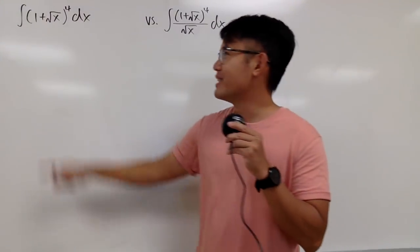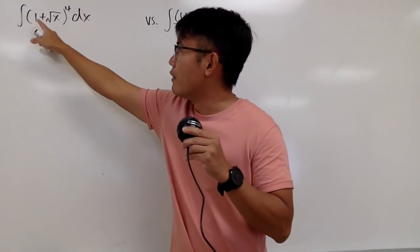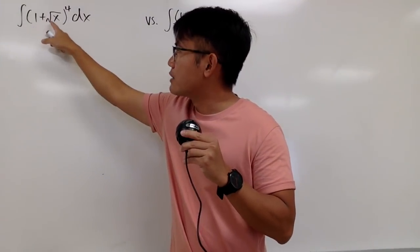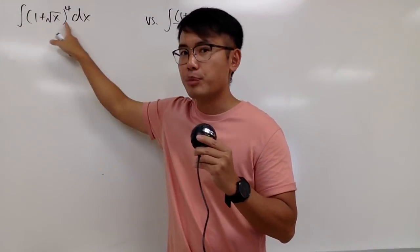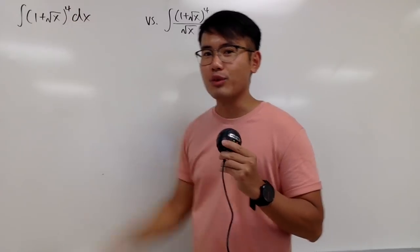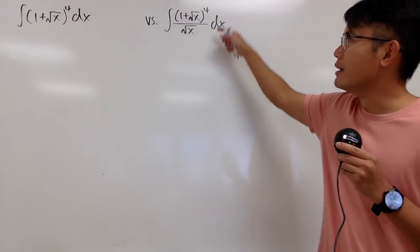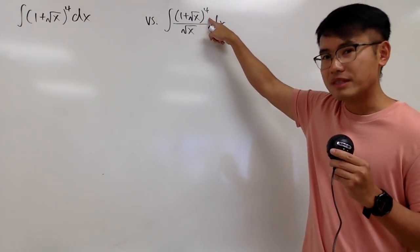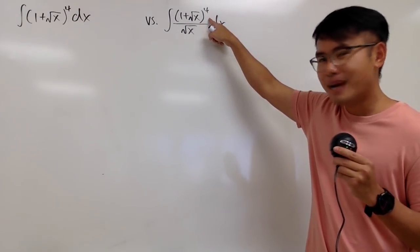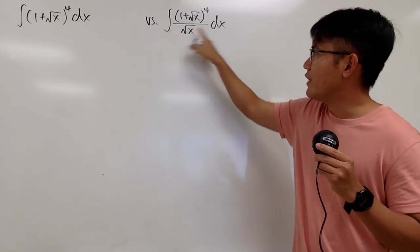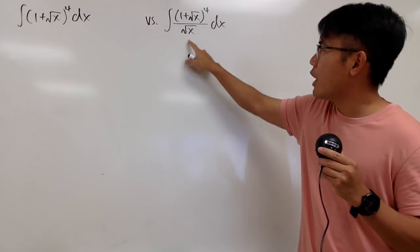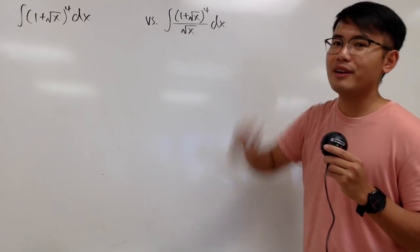We have two integrals. The first one is the integral of (1 plus square root of x) raised to the fourth power. For the second one, we pretty much have the same thing, but we divide it by square root of x.